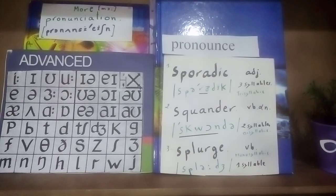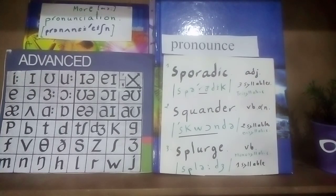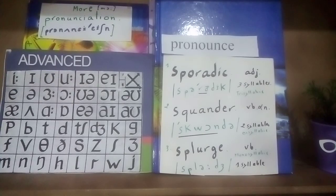The first word is sporadic. It's a three-syllable word and it's an adjective. Sporadic means something that occurs or happens at irregular intervals in terms of time.